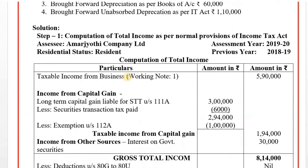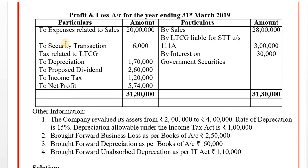For book profit under Section 115JB: STT-related expenses are ignored. Depreciation is added back and then the normal depreciation (other than revaluation) is deducted. Since the company revalued assets, increasing value by Rs. 2 lakhs, only normal depreciation excluding revaluation component is allowed as deduction. Brought-forward business loss and brought-forward unabsorbed depreciation as per books of account are compared — whichever is less. Business loss: Rs. 2,50,000; unabsorbed depreciation: Rs. 60,000 — Rs. 60,000 is less.